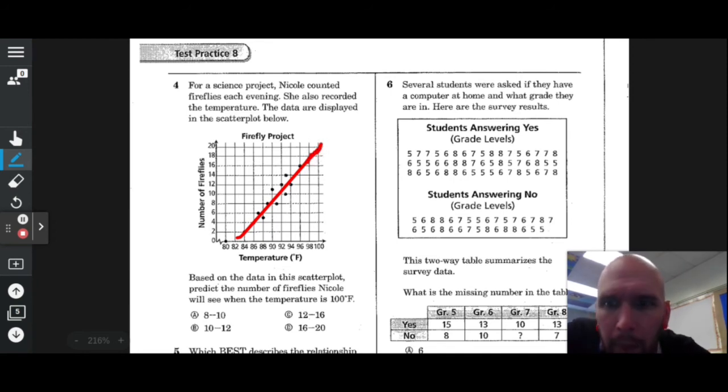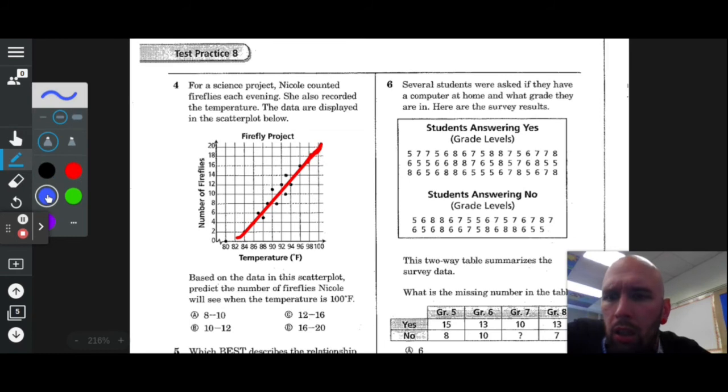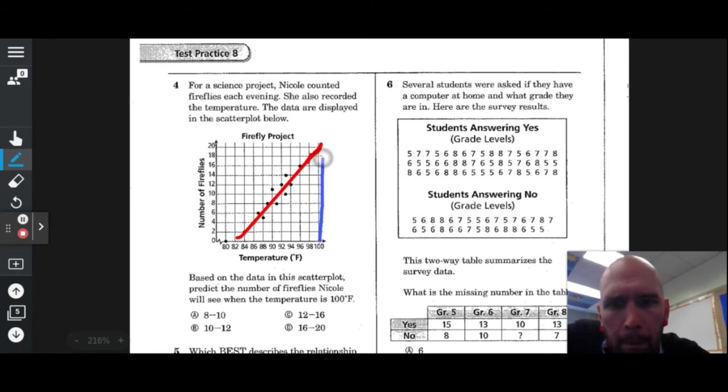Based on the data in this scatter plot, predict the number of fireflies Nicole will see when the temperature is 100 degrees. So 100 degrees is right here, hits the line right there, which is around 18-ish, 20-ish. Between 16 and 20.